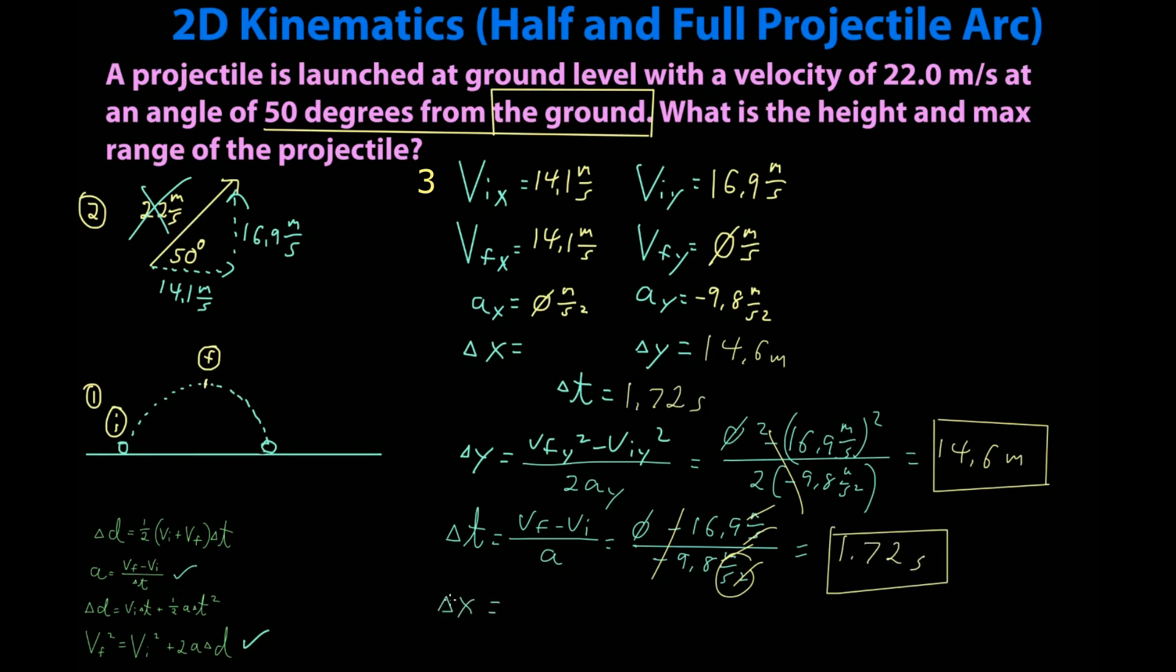Last up delta x. I will use the third kinematic equation. Delta x is VI delta t and the entire second half cancels because there's no acceleration on the x-axis. So I get 14.1 meters per second times 1.72 seconds gives me 24.3 meters. I'll put that here. 24.3 meters.